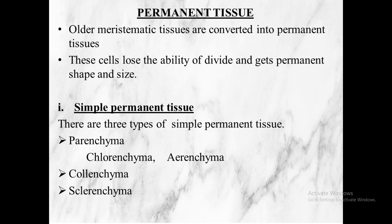If the parenchyma tissue contains chlorophyll, such parenchyma tissue is called chlorenchyma — it is involved in the process of photosynthesis. If the parenchyma tissue contains air cavities, such tissue is called aerenchyma. It is especially present in aquatic plants, where it helps the plant to float in water.